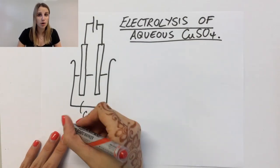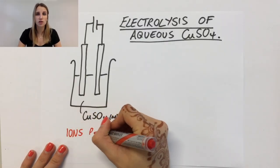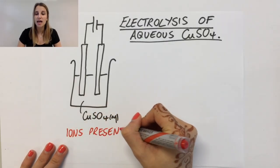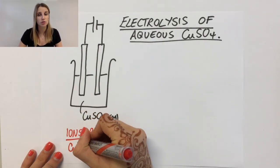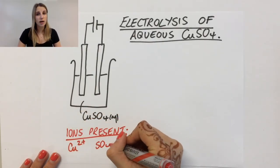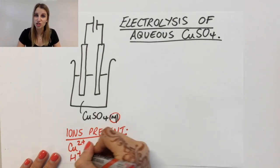Here's my setup of my electrolysis with copper sulfate as my electrolyte. The ions that are present in this are copper 2+ and sulfate ions, as well as H+ and OH- that come from the water.